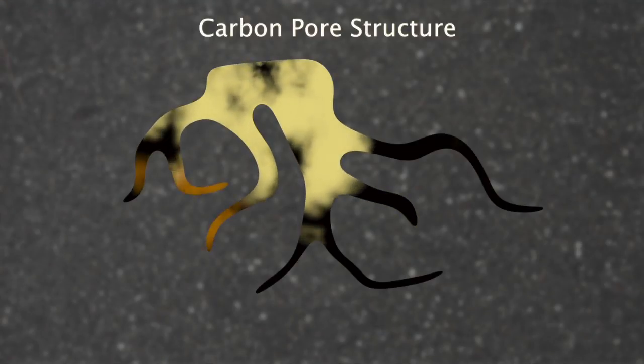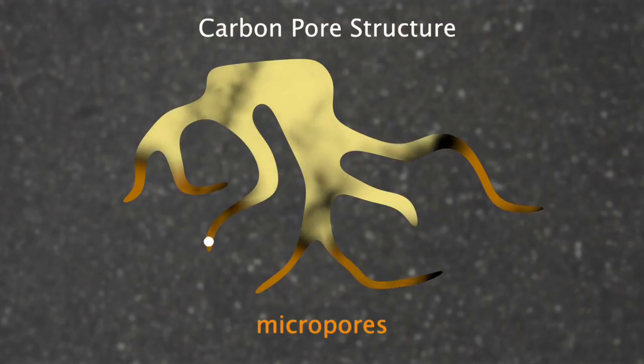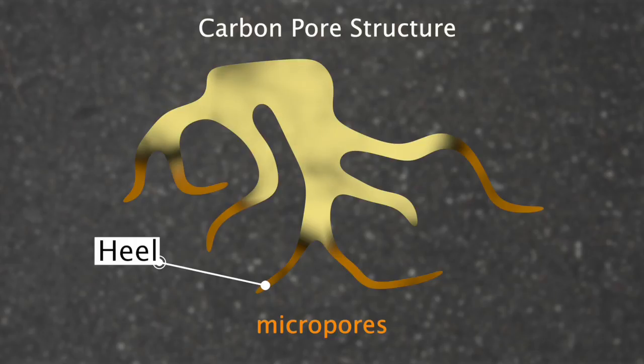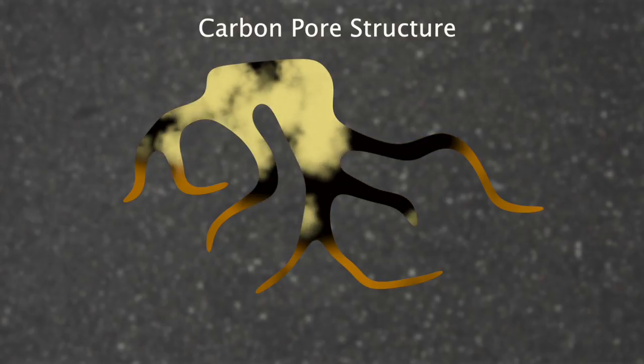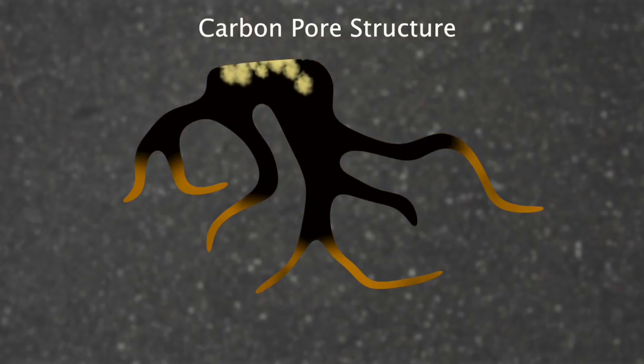The capacity and emissions are related to the heel of the carbon. The heel is the amount of hydrocarbons that are adsorbed by the small pores of the carbon, but are not released during purge. The higher the heel, the less space available for capturing the next cycle of emissions.